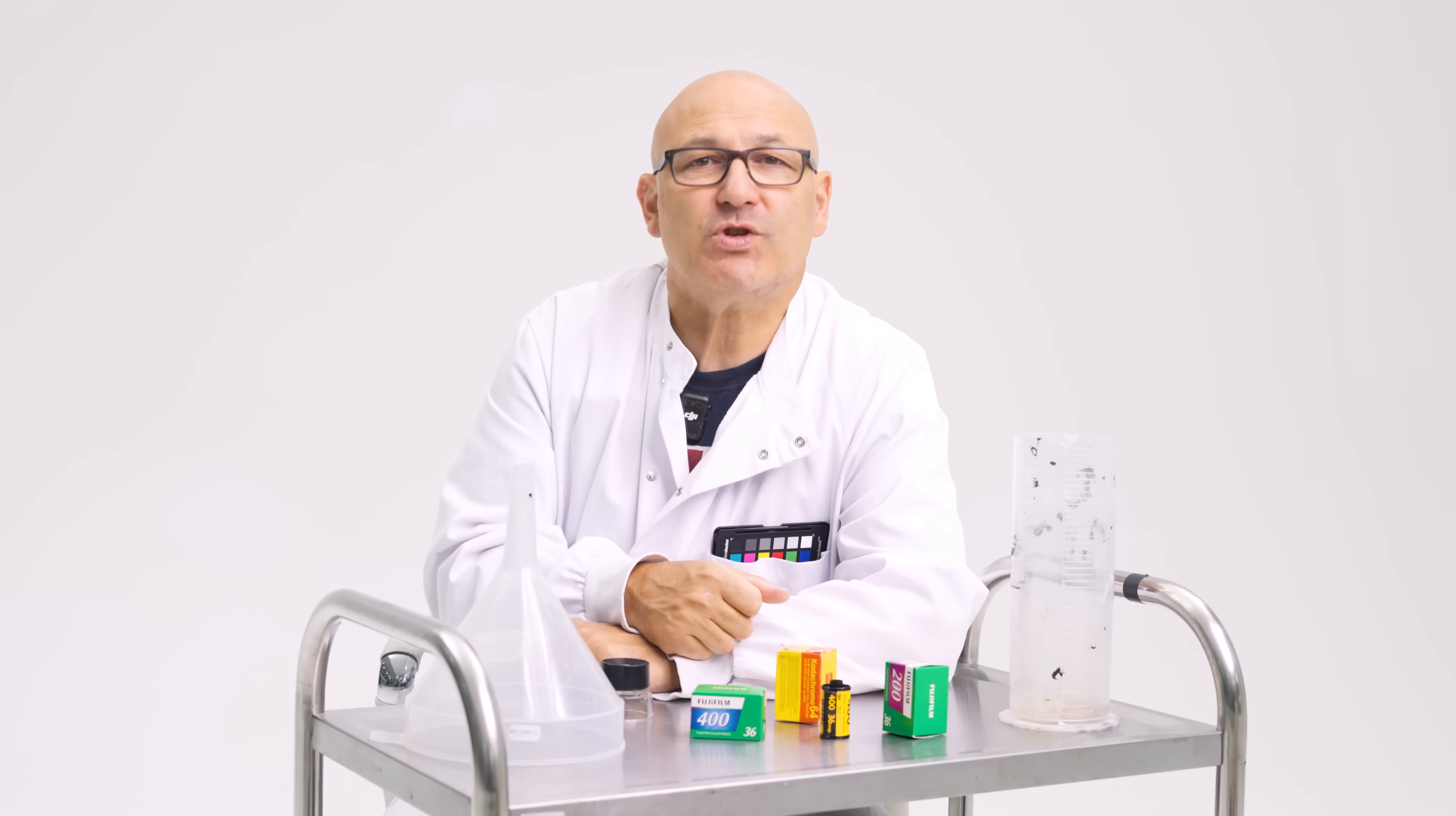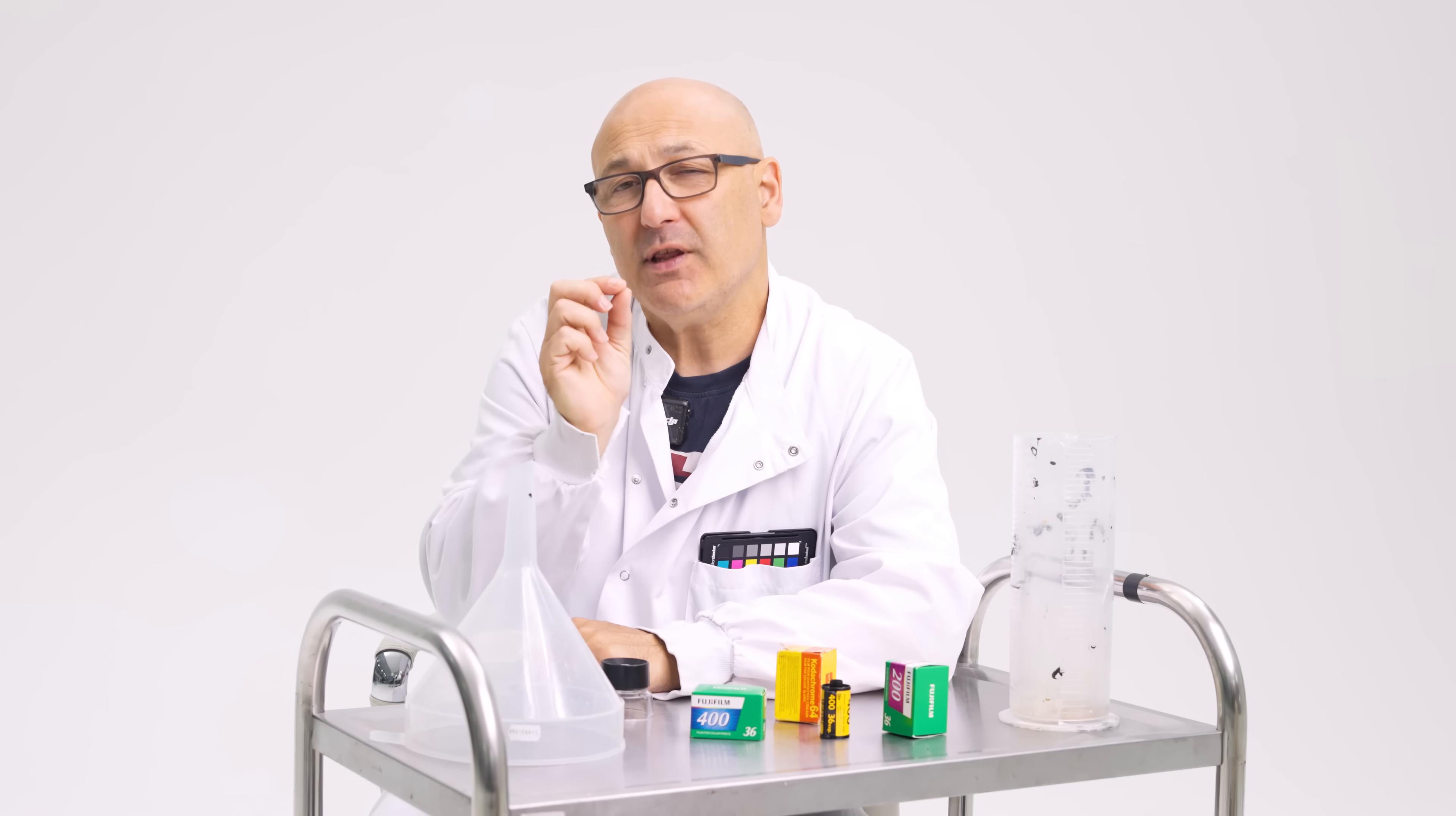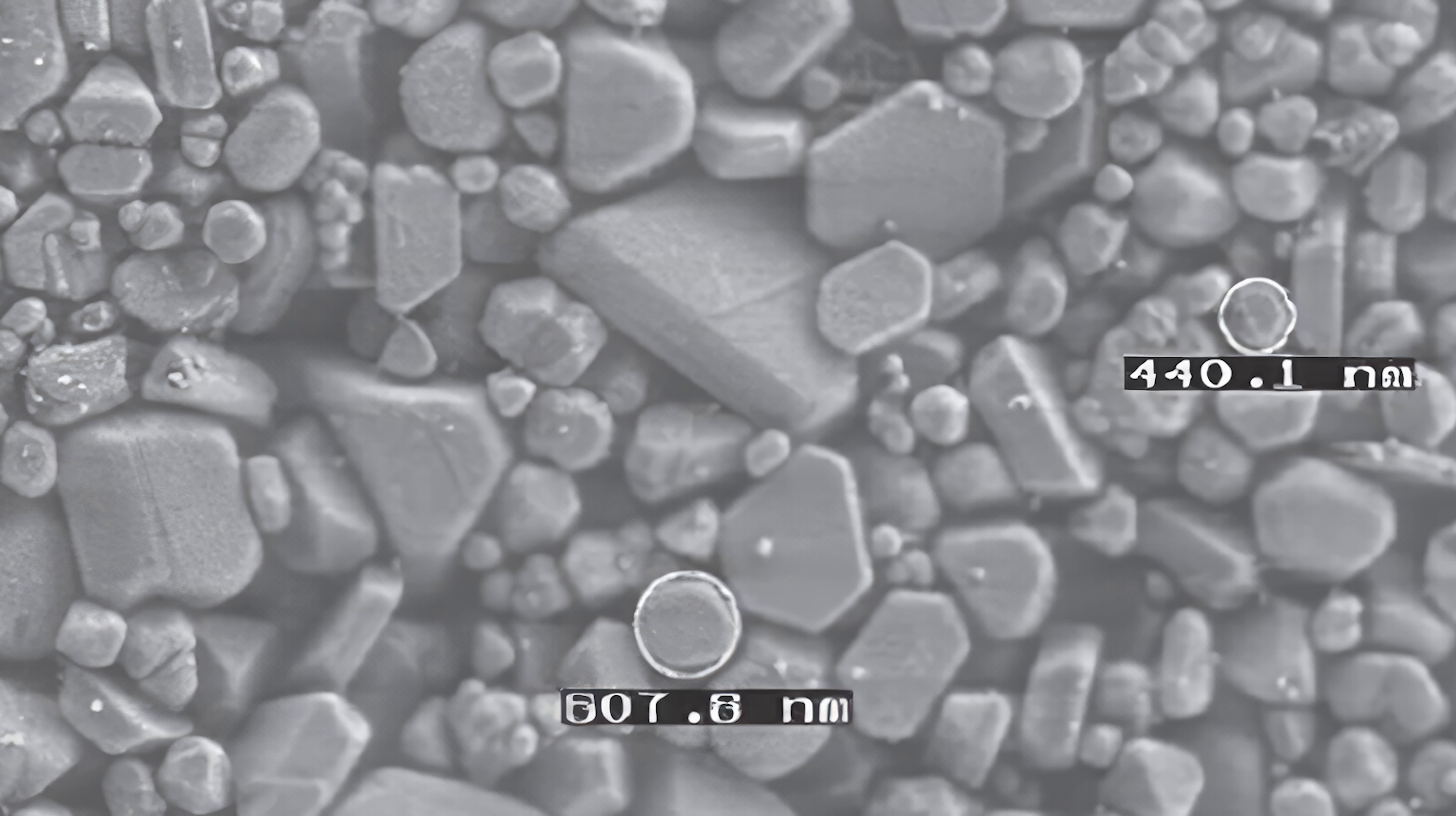So in simple terms, the ISO number described the sensitivity of the film to light, and the higher the sensitivity, the more grainy the results due to the increased size of the light sensitive crystals called silver halide which is embedded into the film emulsion.